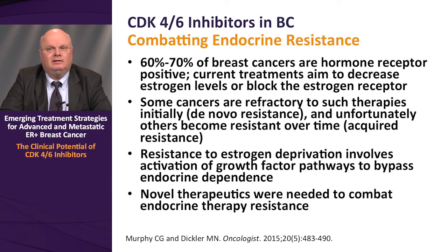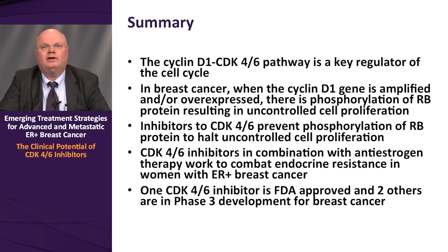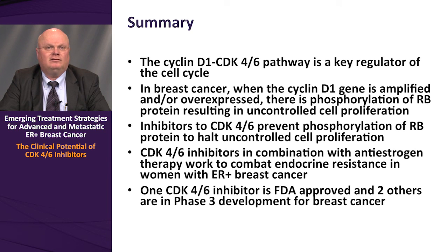Novel therapeutics are needed to combat endocrine therapy resistance. In summary, the cyclin-D1-CDK4-6 pathway is a key regulator of the cell cycle. In breast cancer, when the cyclin-D1 gene is amplified and/or overexpressed, there is phosphorylation of the RB protein resulting in uncontrolled cell proliferation. Inhibitors to CDK4 and CDK6 prevent phosphorylation of RB to halt uncontrolled cell proliferation. CDK4-6 inhibitors, in combination with anti-estrogen therapy, work to combat endocrine resistance in women with ER-positive breast cancer. One CDK4-6 inhibitor is FDA-approved, and two others are in Phase III development.